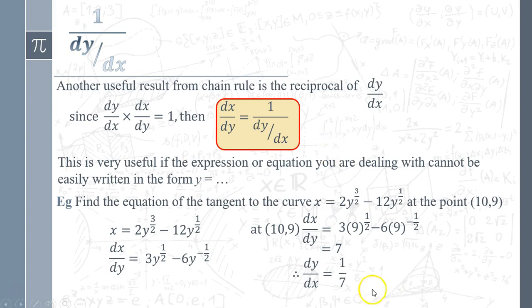So y minus y1 equals m(x minus x1), and there you go, there's the equation of the tangent that we were looking for. Job done.